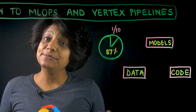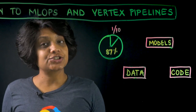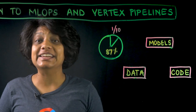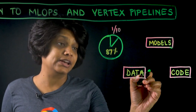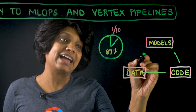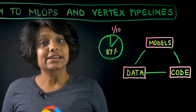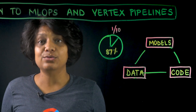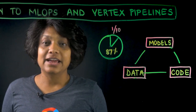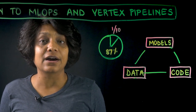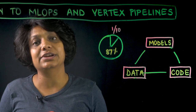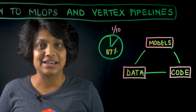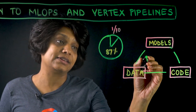In contrast with typical software systems, which are traditionally code-centric, ML systems involve an intricate relationship between data, code, and the models. Data and models are unique artifacts with their own dependencies and pitfalls. The joint management of these three artifacts is a challenge in delivering and maintaining production machine learning systems. That is what MLOps is.